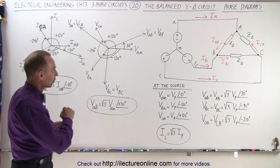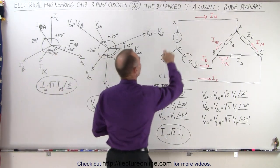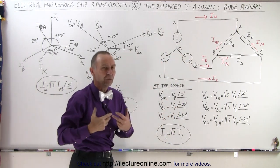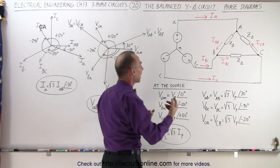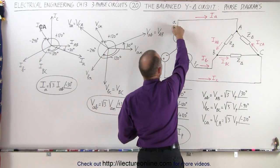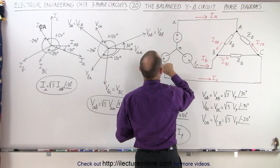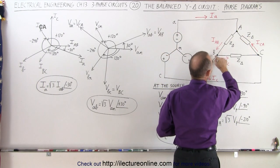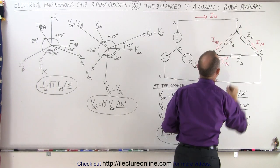First of all, the voltages. We know that the voltage from A to N, from B to N, and from C to N are what we consider the phase voltages. Then the line voltages are the voltage from A to B, from B to C, and from C to A, which is the same as the voltage from A to B, from B to C, and from C to A over here.